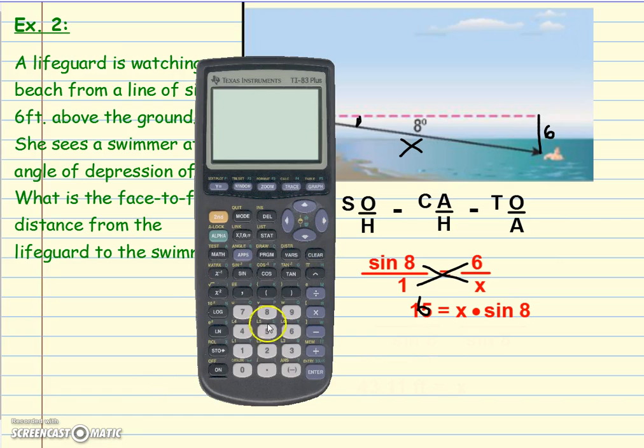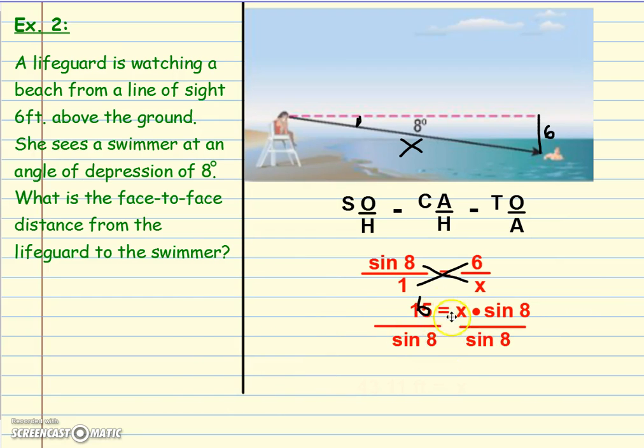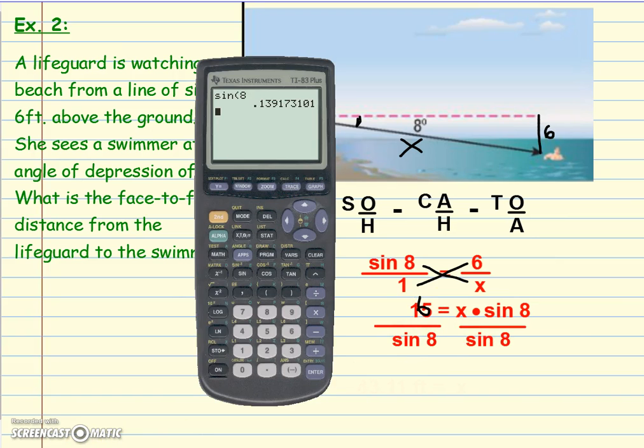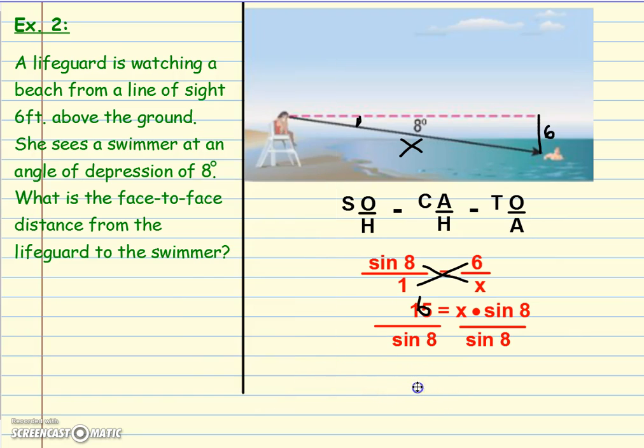Now I can use my calculator. What is the sine of eight degrees? Don't round that off. When you plug it in, we want exact answers, so divide both sides by the sine of eight. Grab your calculator: six divided by the sine of eight degrees. I know it's still in degree mode because I changed it earlier. 43.11. So I know that that lifeguard is 43.11 feet from the swimmer. Angles of elevation and depression still involve using those trig functions.